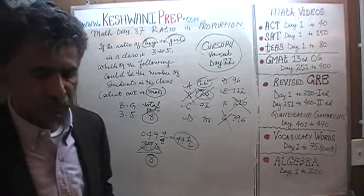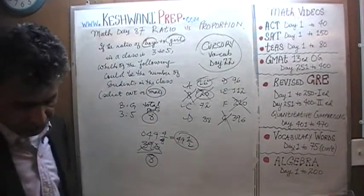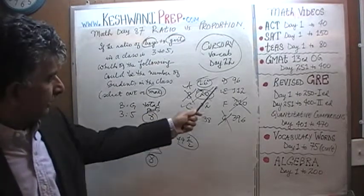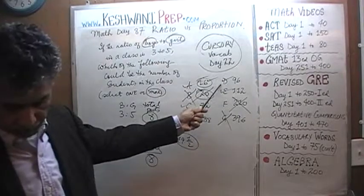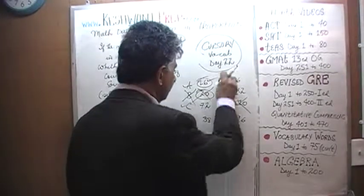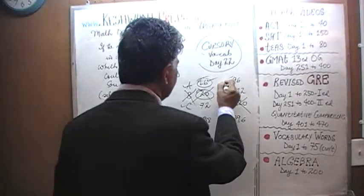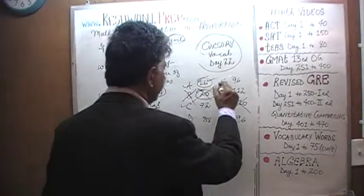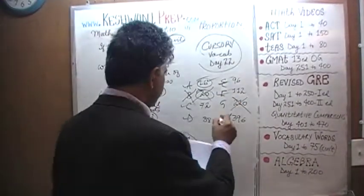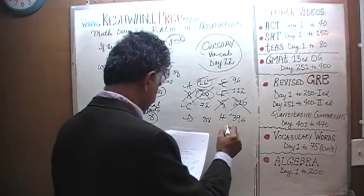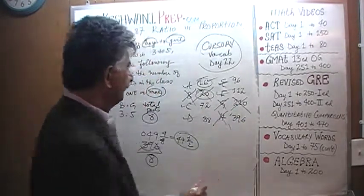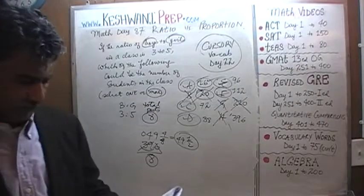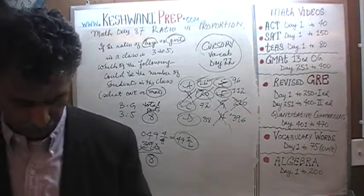So among the eight answer choices given, the correct answers are A, C, D, E, and F. B and G and H were not correct. Let me confirm my alphabets: A, B, C, D, E, F, G, and H. E is correct, F is correct, G was not correct, and H was not correct. So the final answers are A, C, D, E, and F.